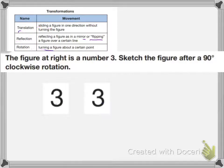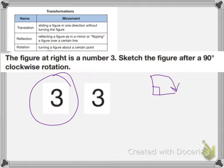So on this problem it wants me to take this number three and write it after a 90-degree clockwise rotation. So 90 degrees would be making a right angle turn, and clockwise is to the right.